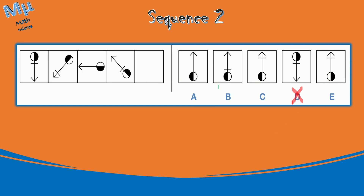So we can rule out option E as well, since it shows black-white when we need white-black — just the opposite. We are now left with options A, B, and C.